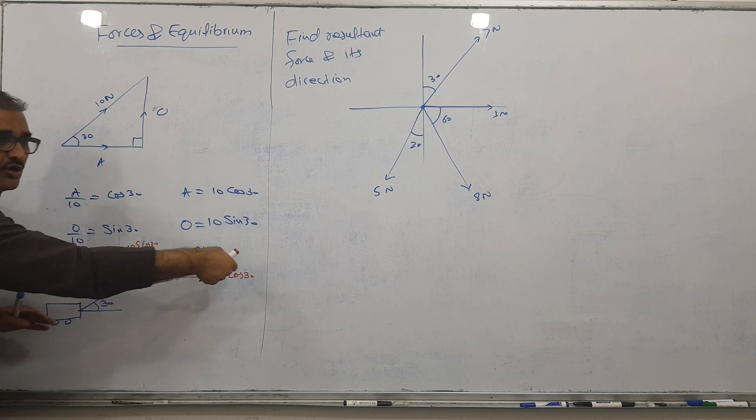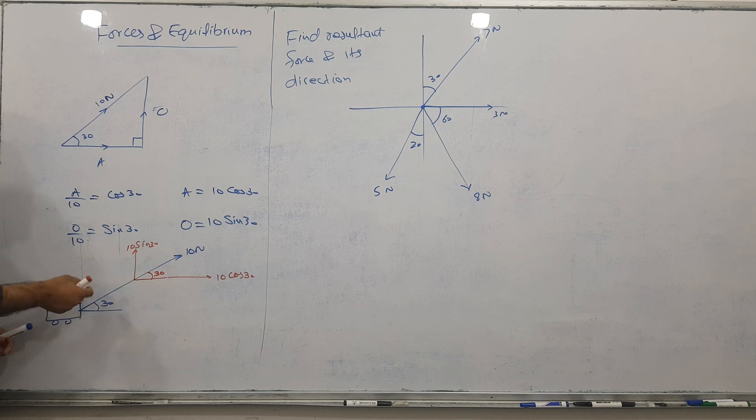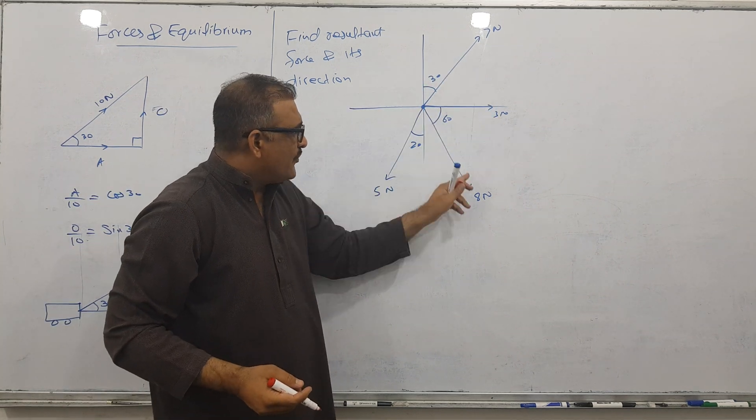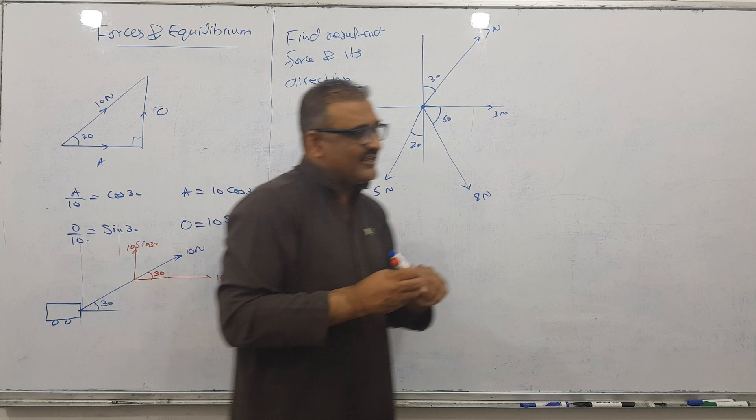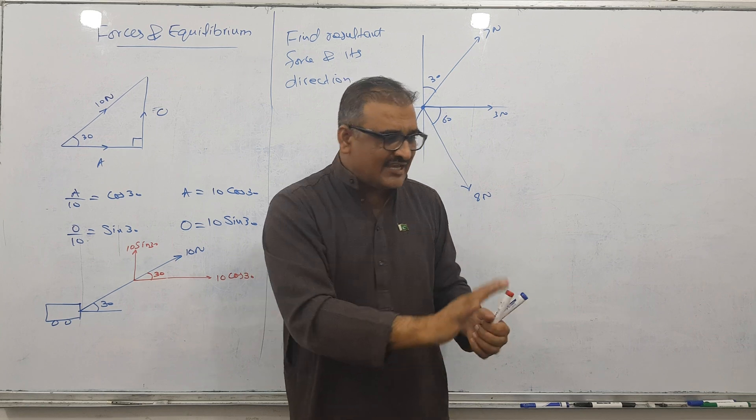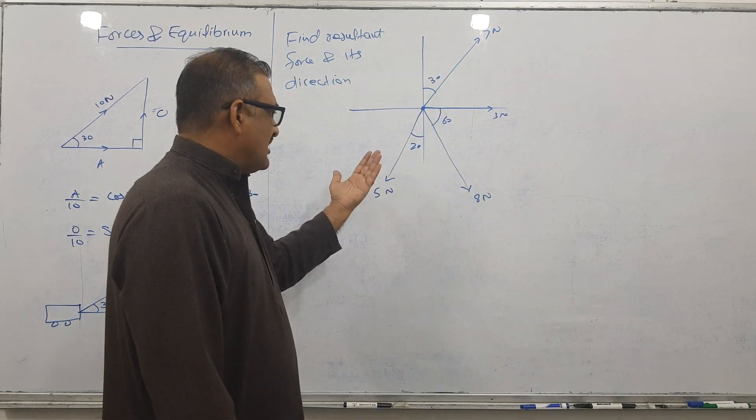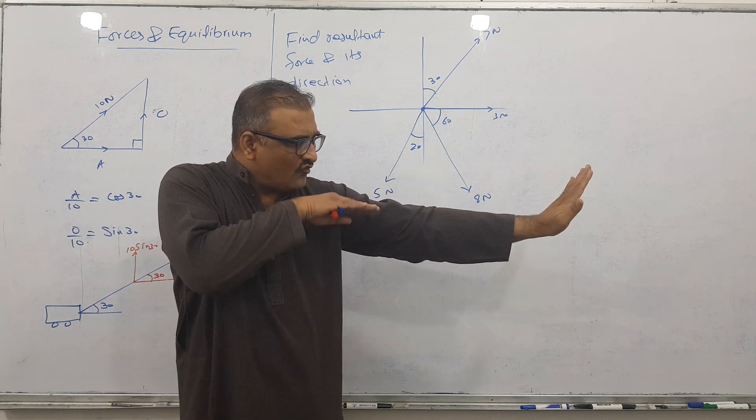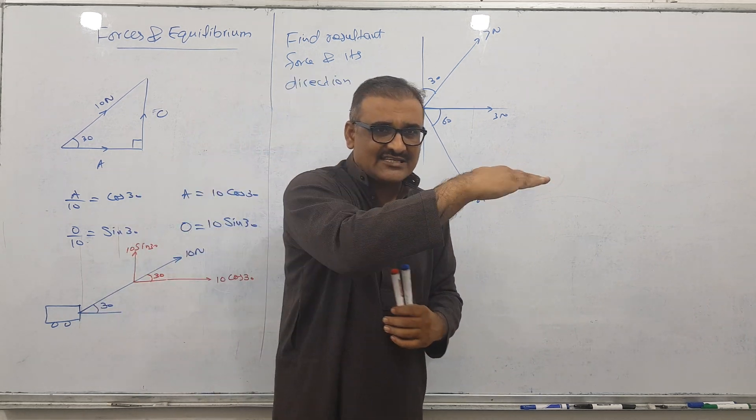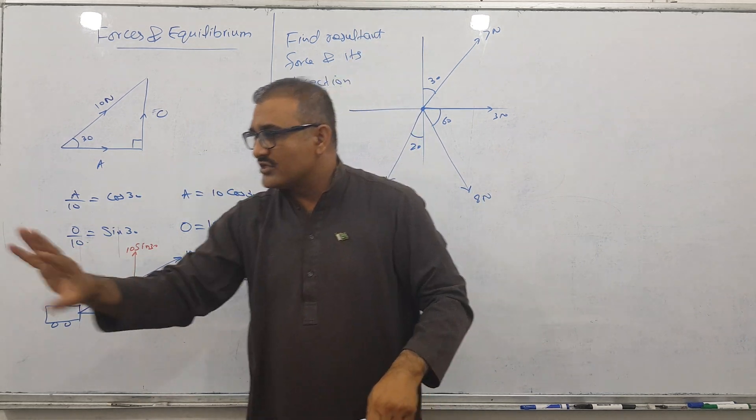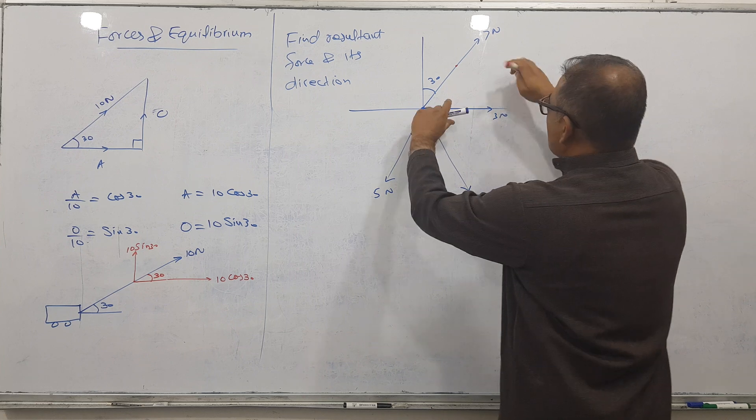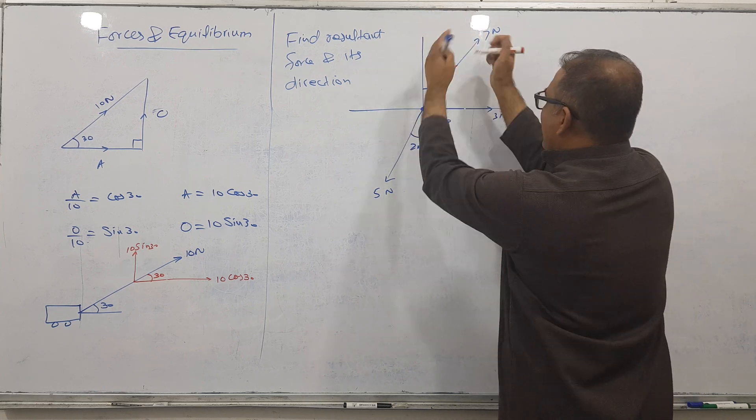This is 10 cos 30 and here 10 sine 30. This component pulls the trolley forward, and this component will not play a role in moving forward. Now we have four forces acting here. A force acting on x-axis has no component - no resolving components.